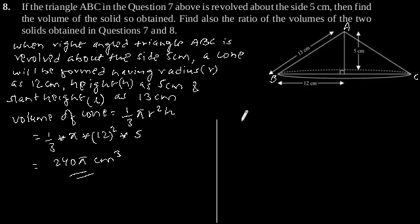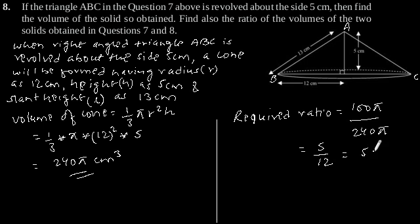Now the second part says to find the ratio of the volumes of the two solids obtained in questions 7 and 8. The required ratio is 100π divided by 240π, which equals 5/12. So the required ratio is 5:12.